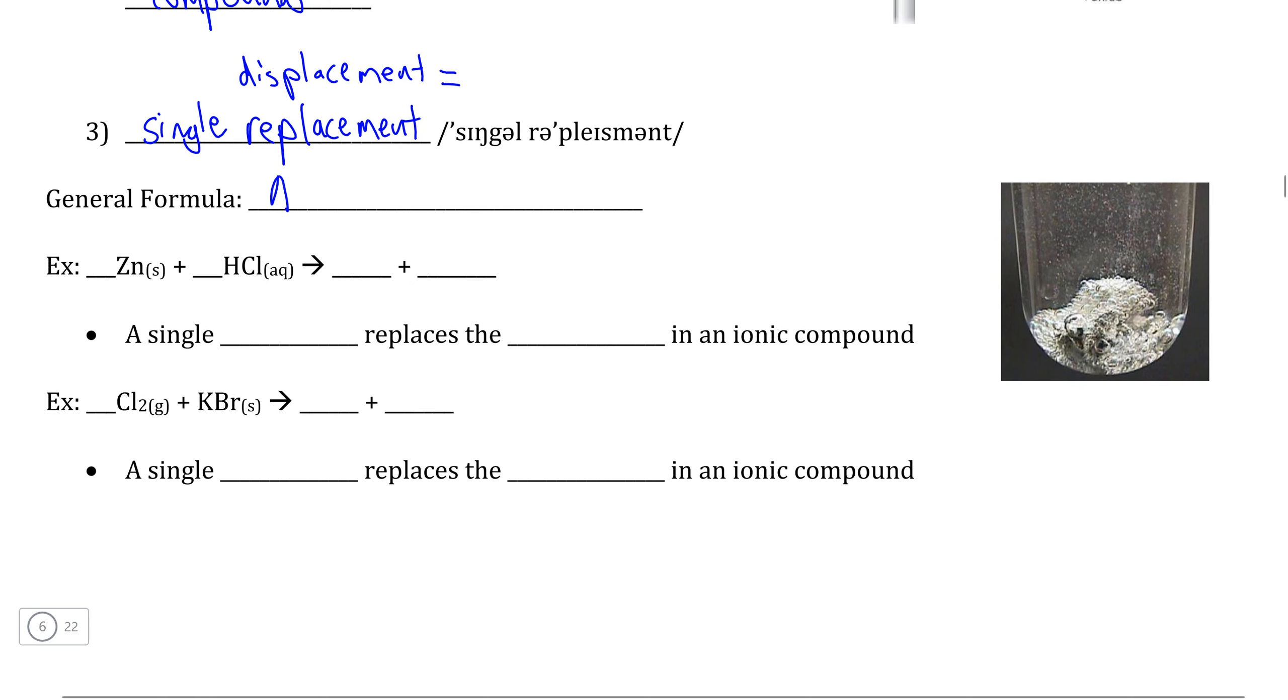So in our first reaction, we can represent zinc simply as A because it's an element, and hydrochloric acid, HCl, as BC.